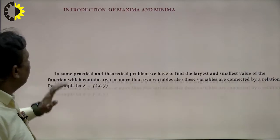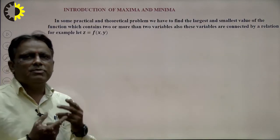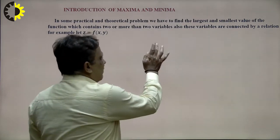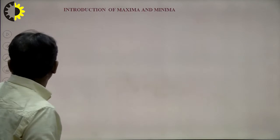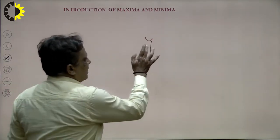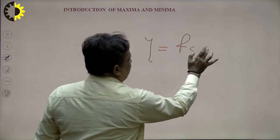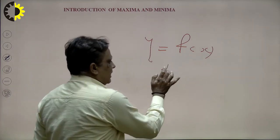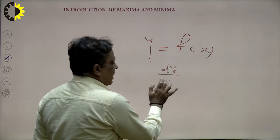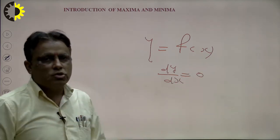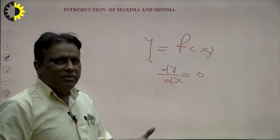We first start with an introduction to maxima and minima. What is maxima and minima of one variable? Students studied this at the 12th level. Consider y = f(x). We find dy/dx and put dy/dx = 0 for maxima and minima. I will explain this graphically. We calculate the critical point, and if the second derivative d²y/dx² is greater than 0, that means minima; if d²y/dx² is less than 0, that means maxima.